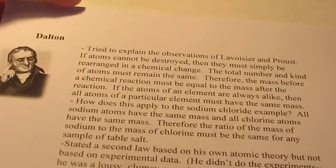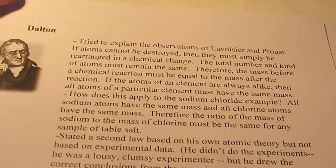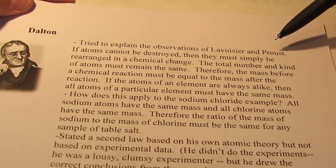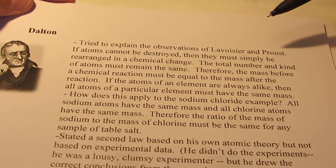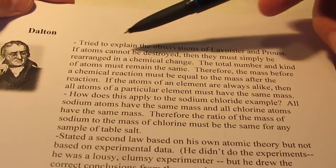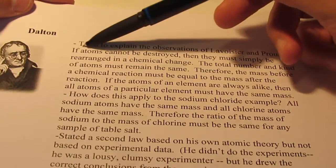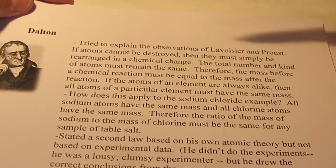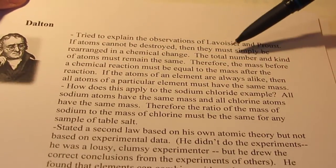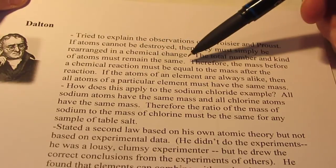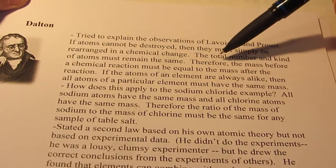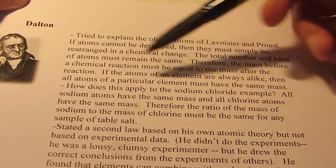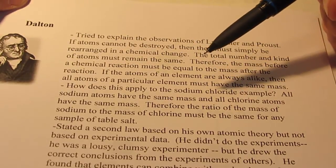Then along came John Dalton. John Dalton tried to explain the work of Lavoisier and Proust, those two individuals we just finished talking about. He felt if atoms cannot be destroyed, notice we're using the word atom here, then they must simply be rearranged in a chemical change. The total number and kind of atoms has to stay the same during that change. Therefore, the mass before a chemical reaction must be equal to the mass after the chemical reaction. Think about that for a minute.